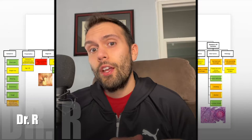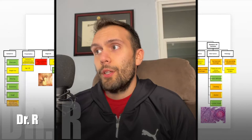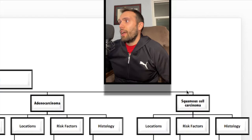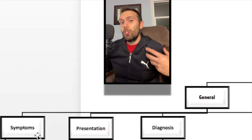I'm going to jump back and forth between the general information that would apply to both adenocarcinoma and squamous cell, and then go back and forth between the specifics of the two diseases. There are two major types of esophageal cancer: adenocarcinoma, the more glandular type, and squamous cell carcinoma. Let's start with a high-level overview.